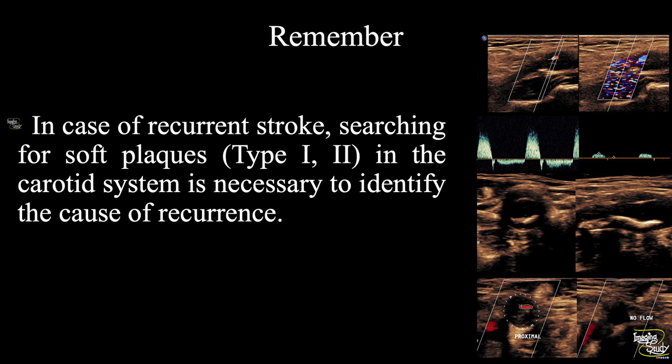Another take-home message: in cases of recurrent stroke, searching for soft plaques — that is Type 1 or Type 2 plaques — in the carotid system is necessary to identify the cause of recurrence. Thank you for watching this video. Subscribe to our YouTube channel for more. See you in the next one — have a nice day!